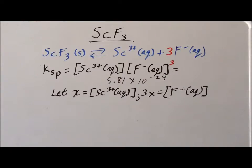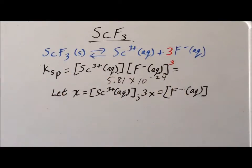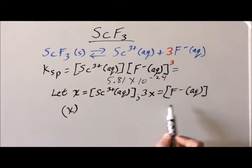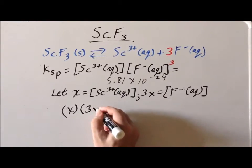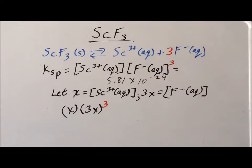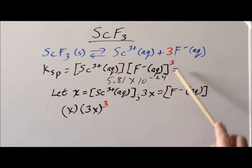Now the key step is to substitute these expressions into the Ksp expression. Scandium³⁺ is x, so we write x there. Fluoride is 3x, so we carefully write that in. We also have to remember that in the Ksp expression, we have the exponent of 3 on the fluoride term. So we have a 3 inside the parentheses from the stoichiometric ratio, and also a 3 as the exponent from the rules for writing equilibrium constant expressions. We need both of these 3s — if we leave out one of them, we are going to make a mistake.